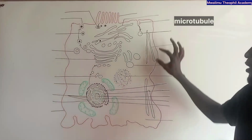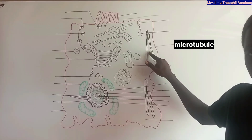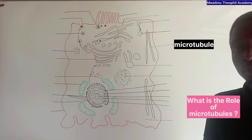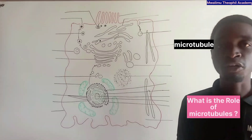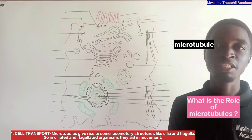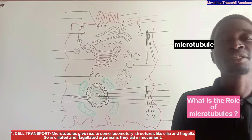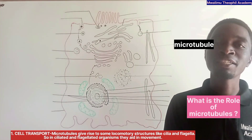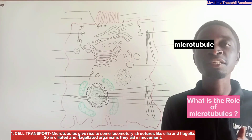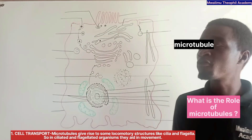These are microtubules. Microtubules have a number of roles. The first role is that they give rise to some locomotive structures like cilia and flagella, and these cilia and flagella aid in movement of organisms.